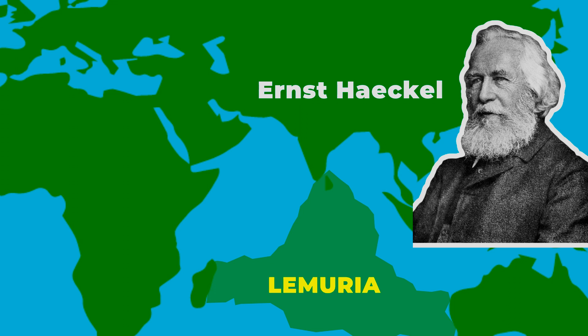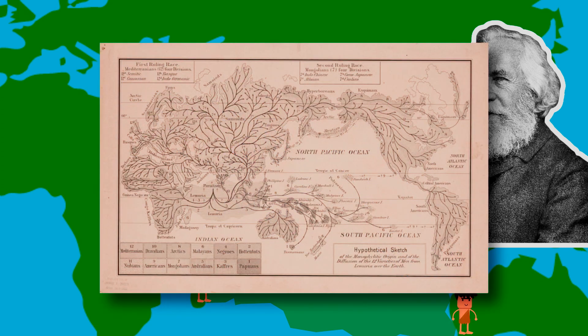...where he claimed a sunken landmass called Lemuria had existed as an explanation for the absence of missing link fossil records of Lemurs. He also included migration routes, which he thought the first humans had used outside of Lemuria and not Africa. This theory was later overridden by Alfred Wegener's plate tectonic theory.